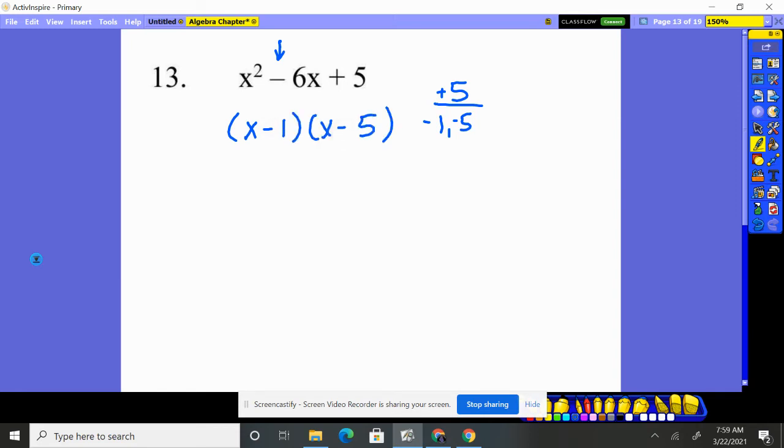And we can check it out. X times X is X squared. Negative 1 times negative 5 will give us this, so those are taken care of. The middle piece is always created by these and these, the outer and the inner: negative 5X and negative 1X. Yep, it gives you that negative 6X you need, so you know you're correct.